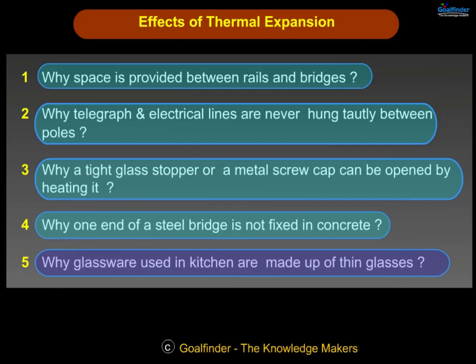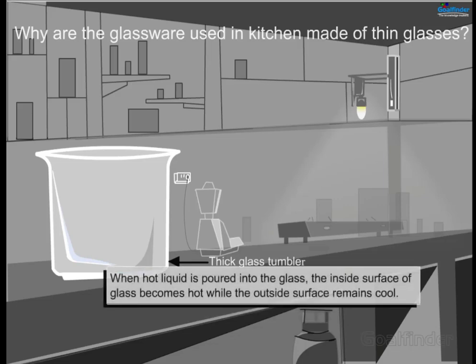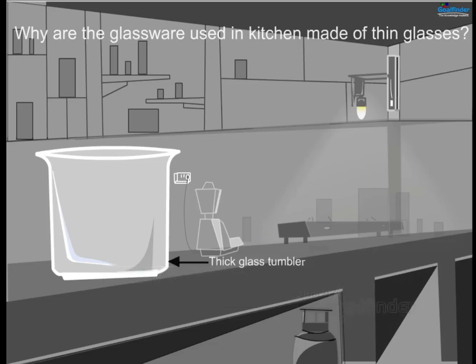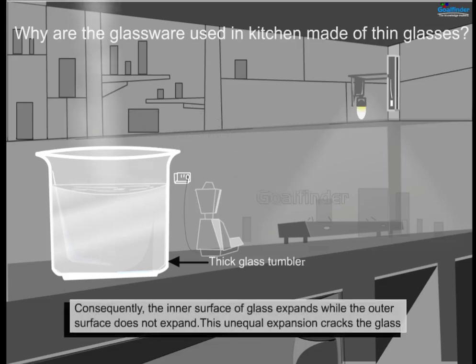Why is glassware used in the kitchen made up of thin glass? Glass is a poor conductor of heat. When hot liquid is poured into a glass, the inside surface becomes hot while the outside surface remains cool. This unequal expansion cracks the glass.